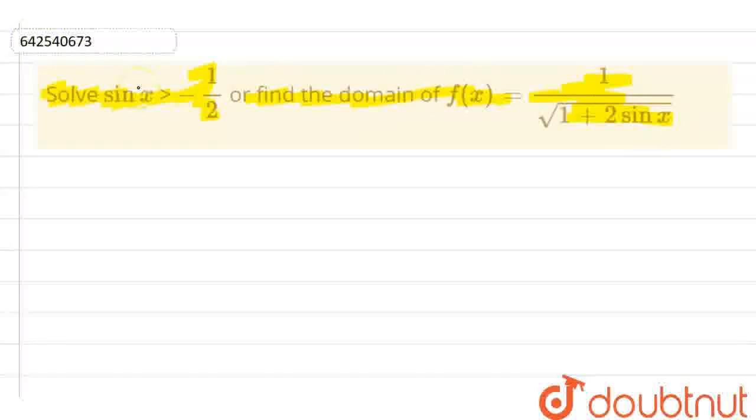First of all, this question is the same here. There is no concept of 'or' because if you find the domain there, let me write f(x) as 1 by under root 1 plus 2 sin x.